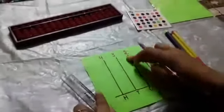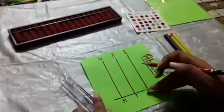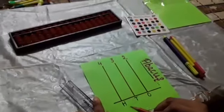These vertical lines will represent the rods. And these rods will represent the ones, tens and hundreds.